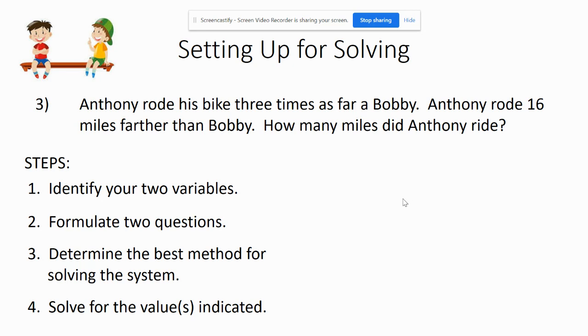First off, let's start with what we know. Let's identify two variables. I'd probably go with Anthony and Bobby. Bobby would be B and Anthony would be A.